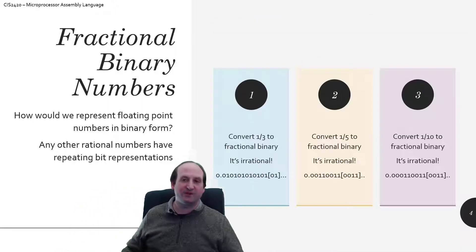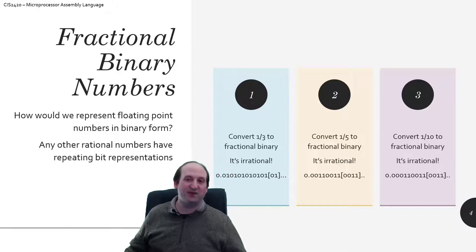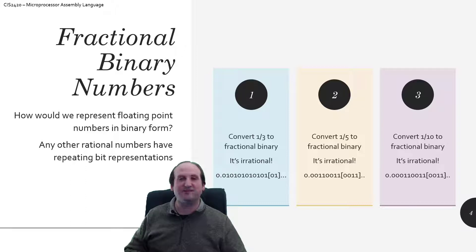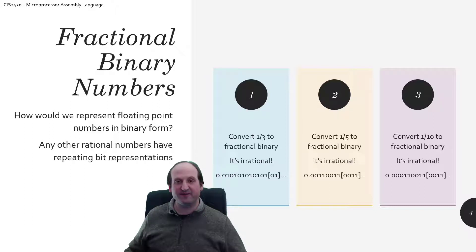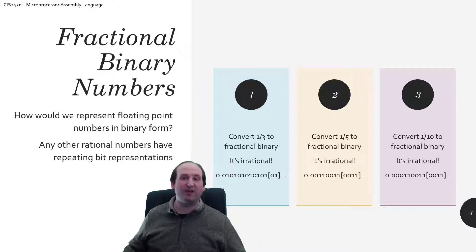Numbers that are trickier to represent in binary include 1/3, 1/5, and 1/10. One tenth is easy in base 10 — just 0.1 — but no matter how many bits you have, you will never be able to represent 1/10 exactly in binary. It's called irrational in base 2. The same goes for 1/5 and 1/3. The rule is: anything with a denominator that is a power of 2 can be exactly represented in binary. Any other denominator is irrational in binary, and we can only approximate as best we can.